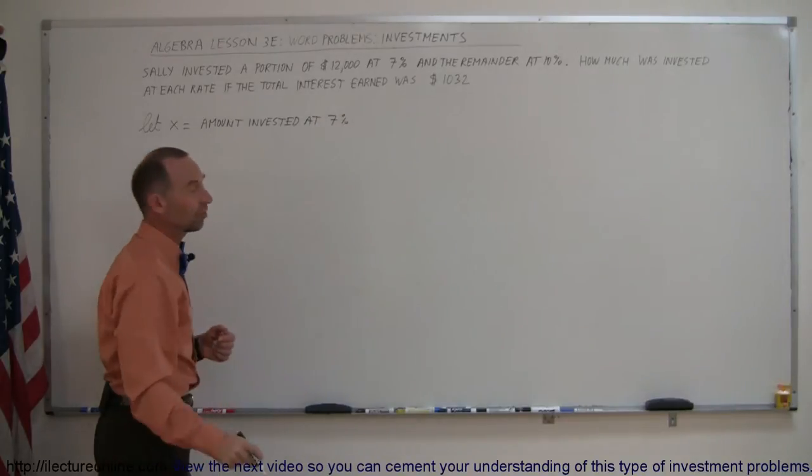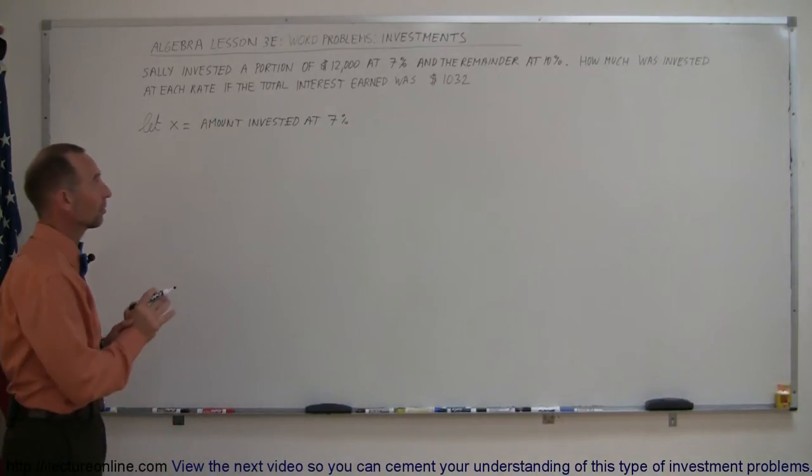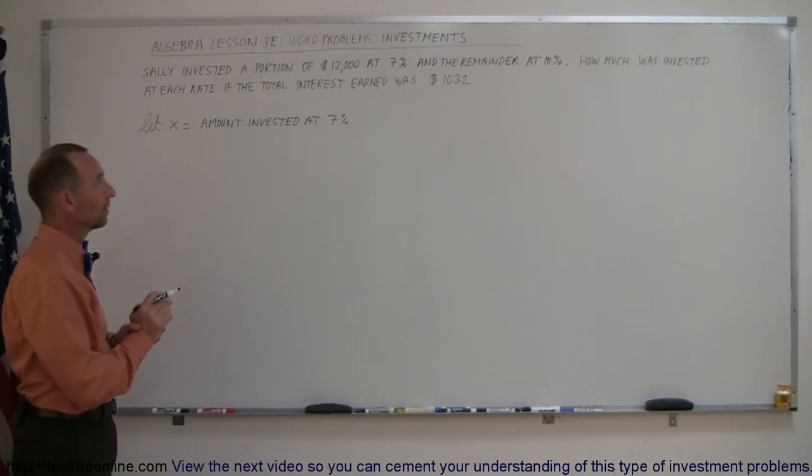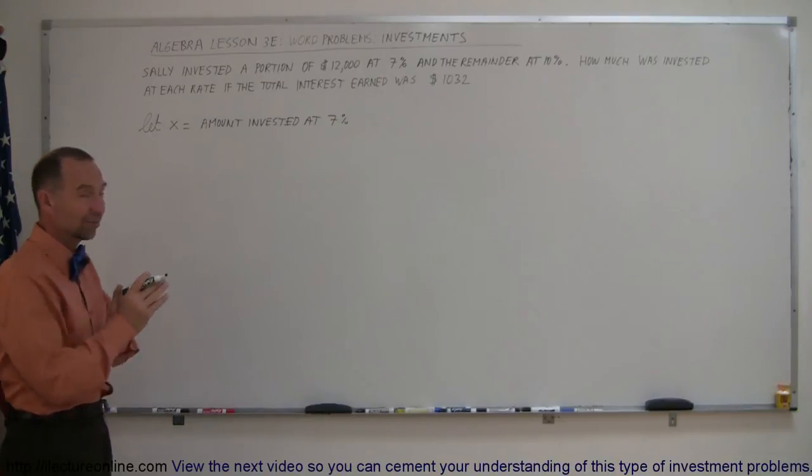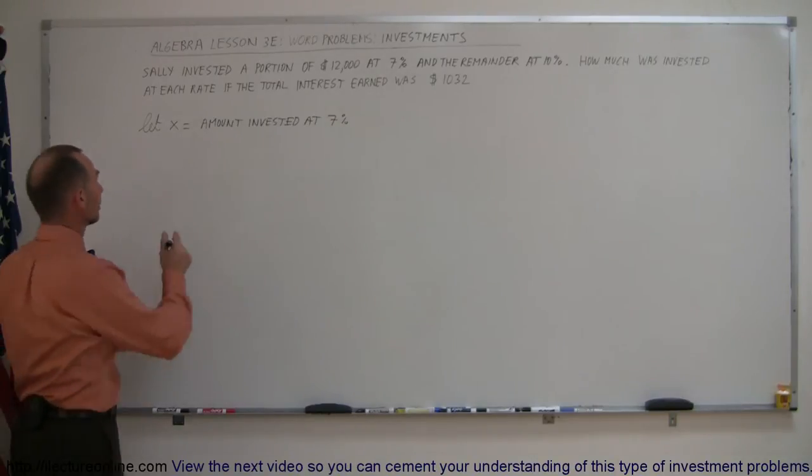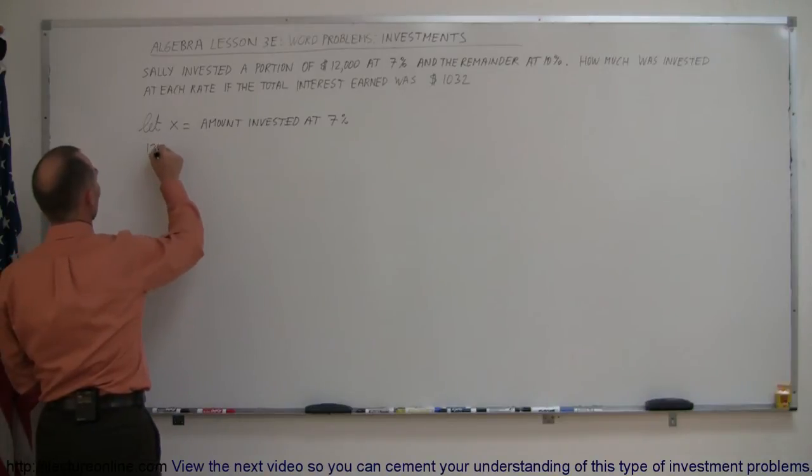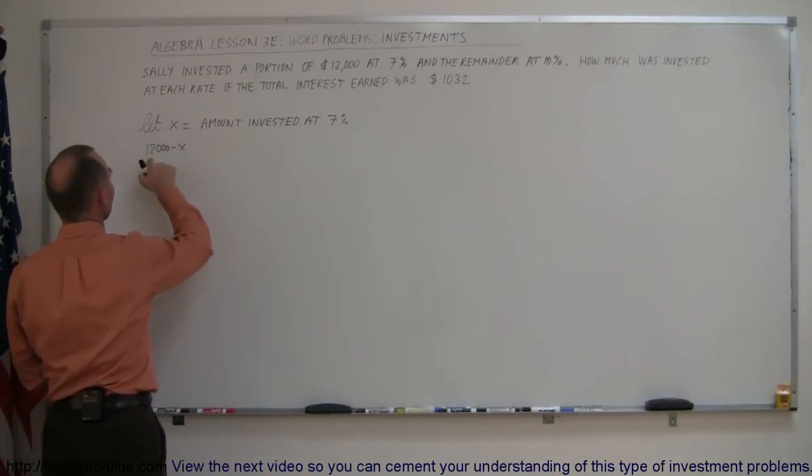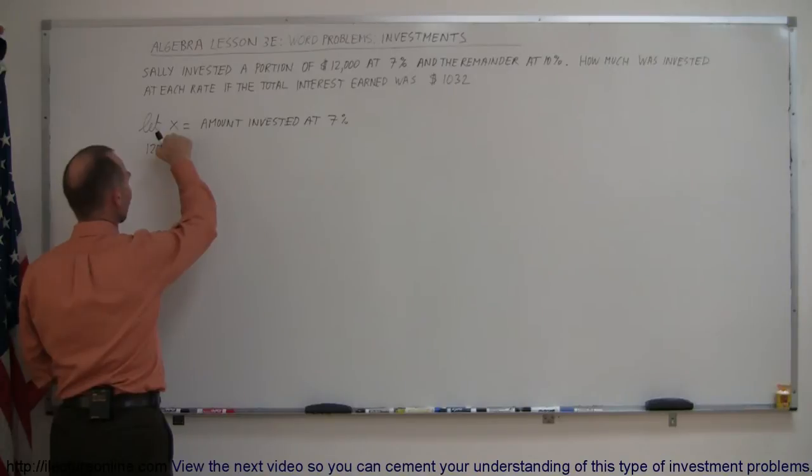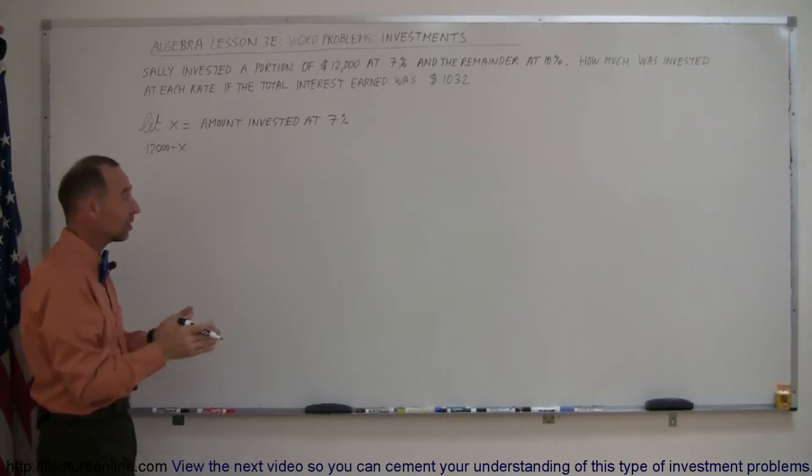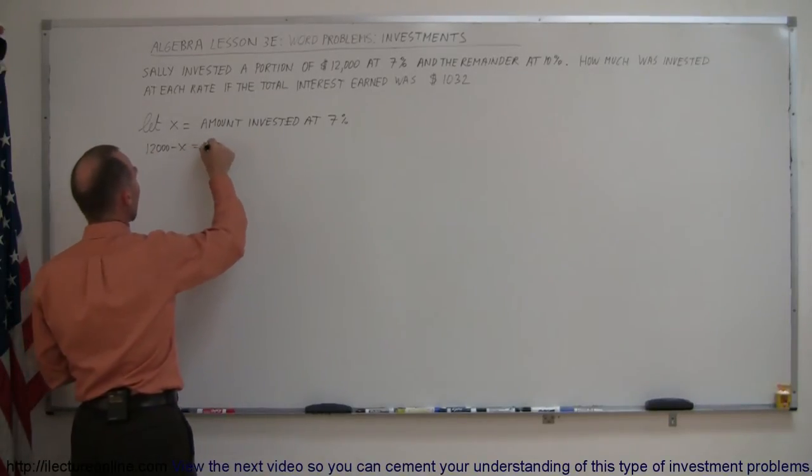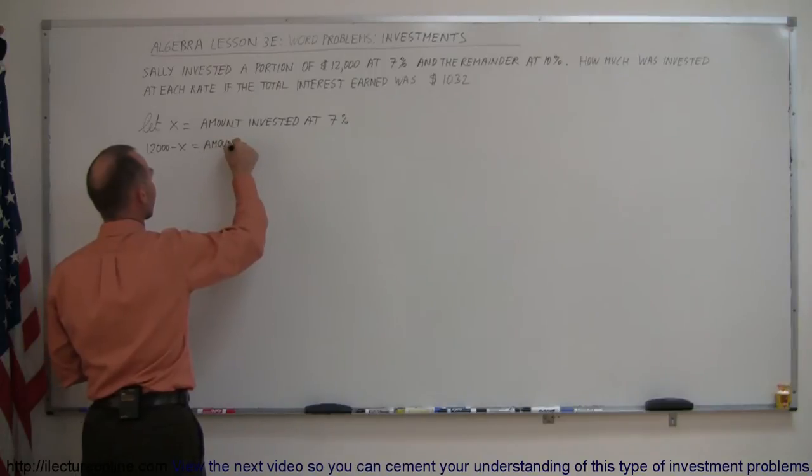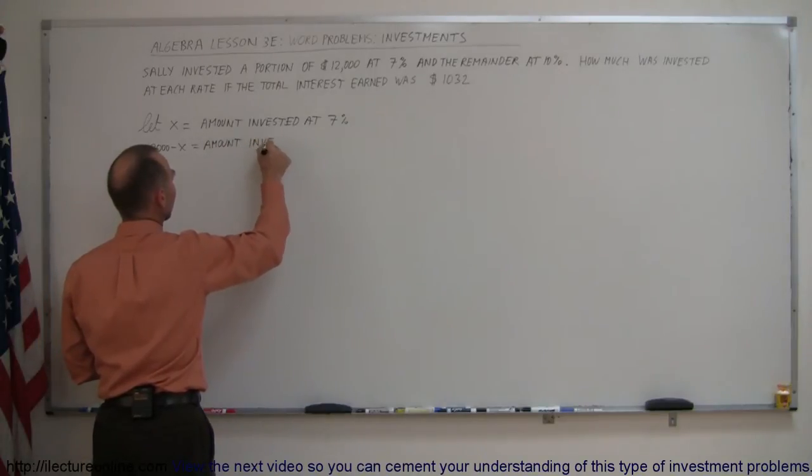Now, it doesn't have to be 7%. We could have said 10%. It makes no difference. But if we let X equal the amount invested at 7%, then the remainder, which can be found by taking $12,000 minus X, we take the total invested minus what we invested at 7%, and what's left over, the difference, is equal to the amount invested at 10%.